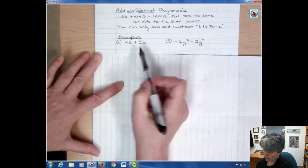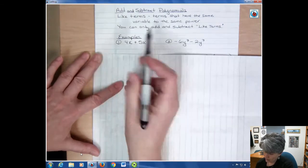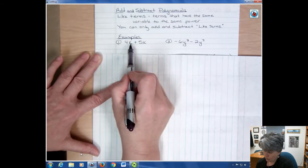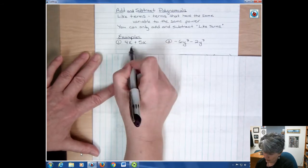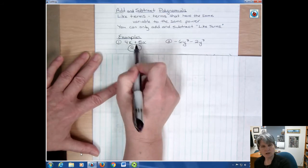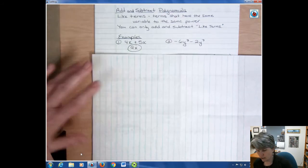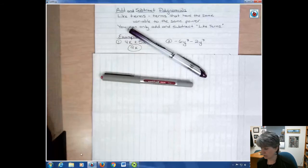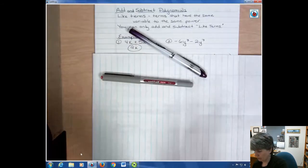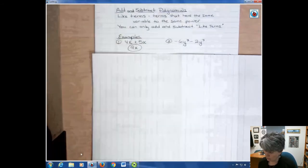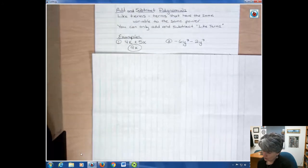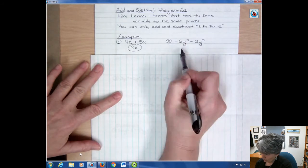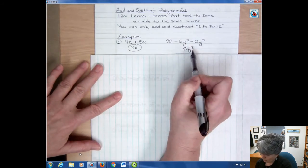When you add like terms, you get a like answer. I don't change this to be x to the second power. I've got four x's and five more x's, so I have nine x's. Nine x, not nine x squared. It's just like in English—if I have one pen and then I add another pen, I have two pens, not two erasers. I don't change the unit. I'm just adding the number of those things together. In number two, I have negative six and negative two, which is negative eight, and it's going to be y cubed still.